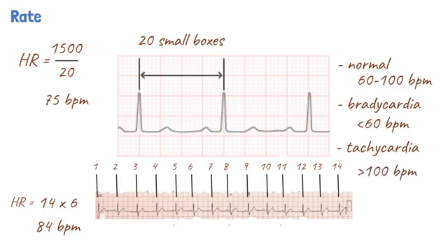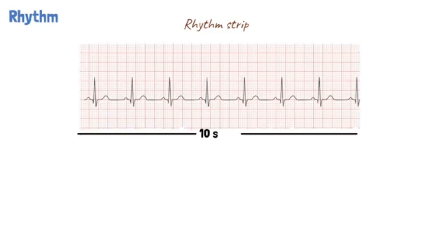The best way to assess the ECG rhythm is by inspecting the rhythm strip. This is usually the 10-second recording from lead 2. The first thing to look at is whether the QRS rhythm is regular or irregular. This can be done by inspecting the rhythm strip and looking at the RR intervals, which should be equal across the entire rhythm strip.